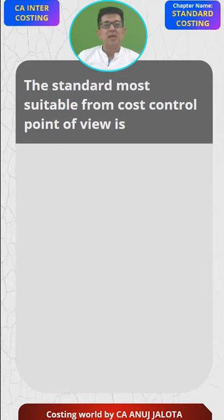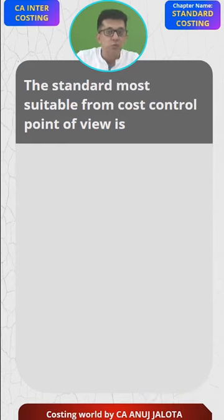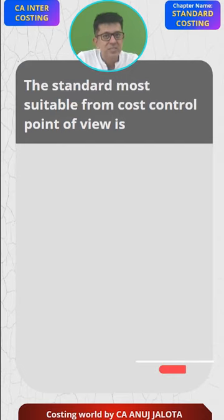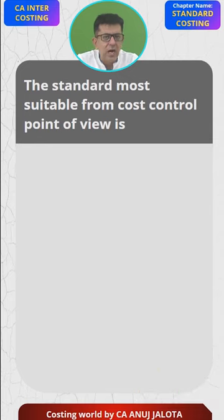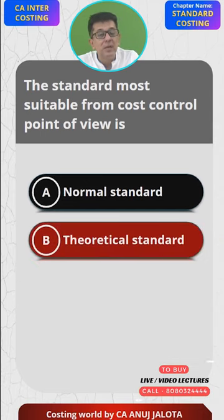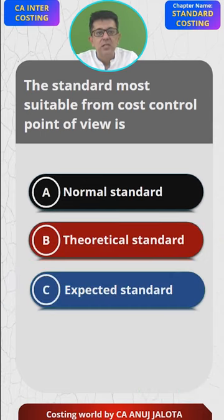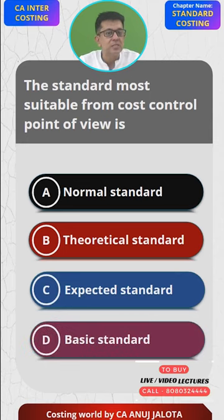The question for today is: which standard is most suitable from a cost control point of view? The four options are: A) Normal Standard, B) Theoretical Standard, C) Expected Standard, and D) Basic Standard. Think of the correct answer.